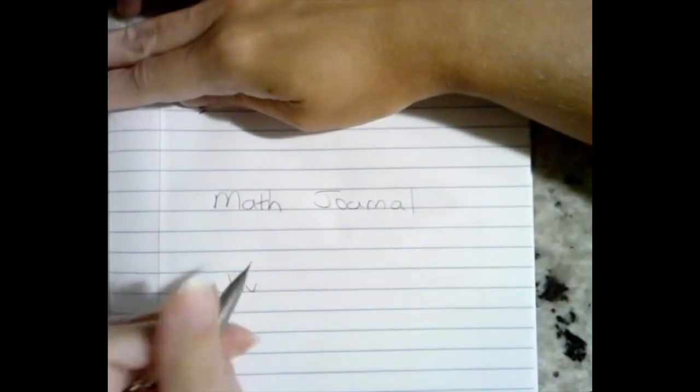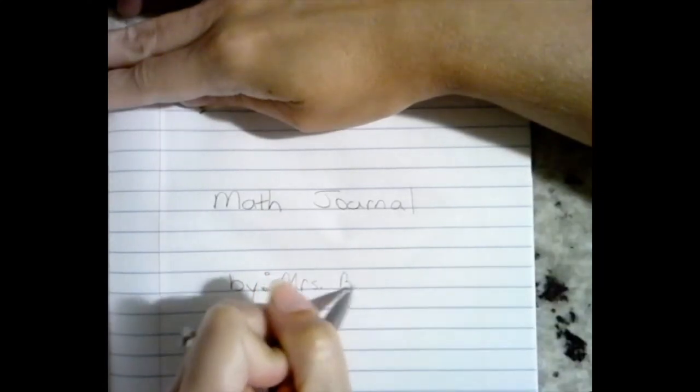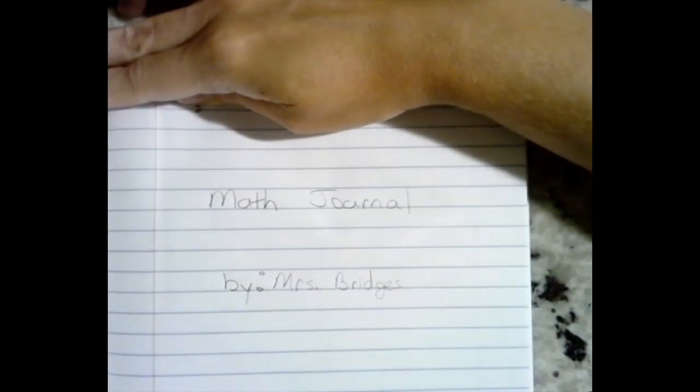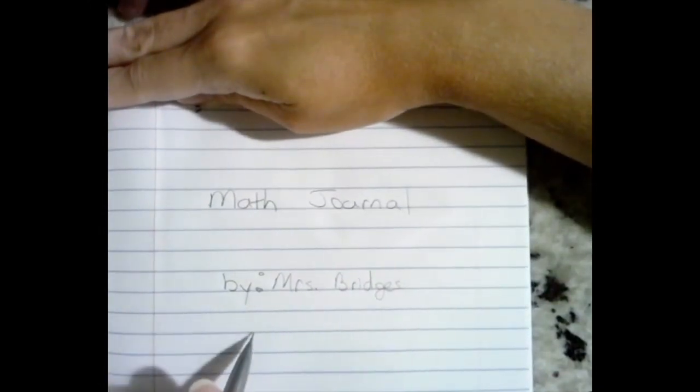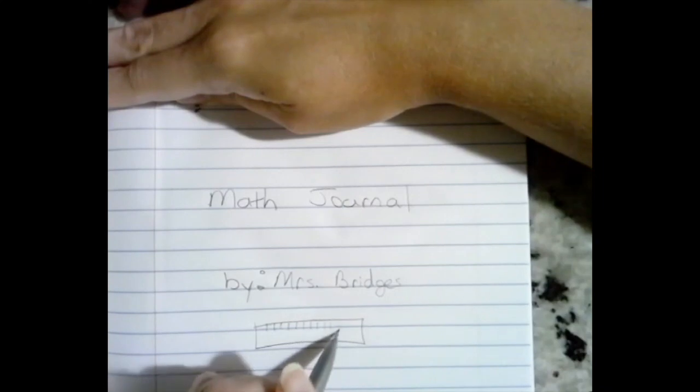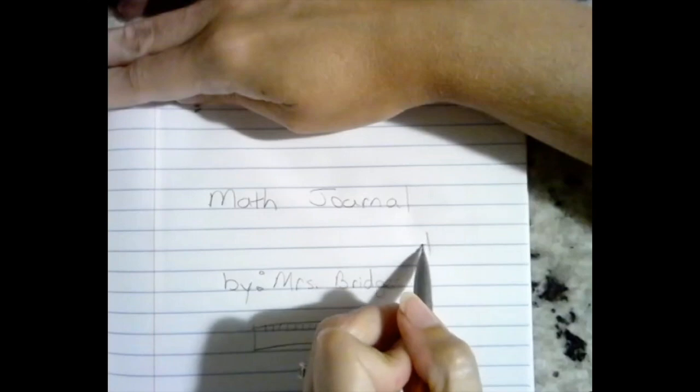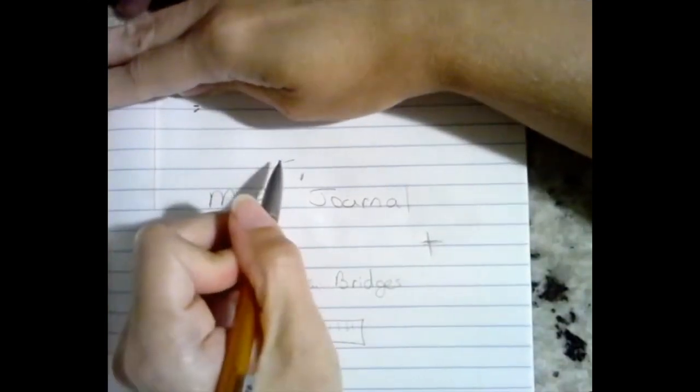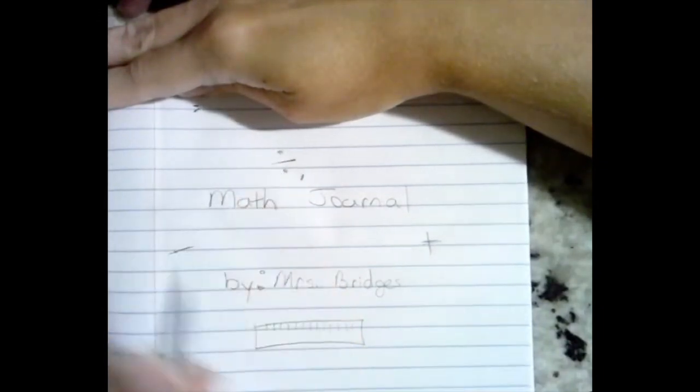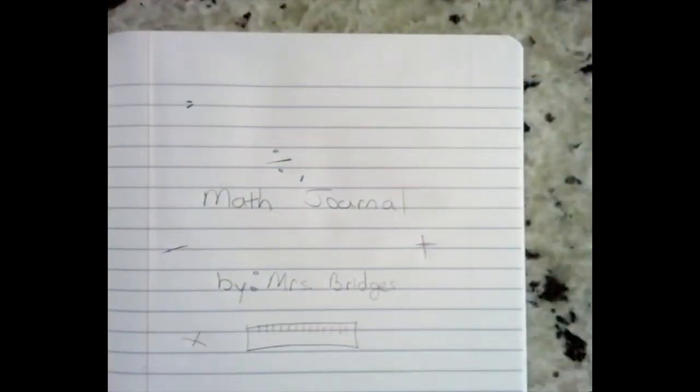My pencil keep breaking. Miss Bridges. And usually on a cover or on a title page, there is some sort of picture. Miss Bridges is not an artist. So I'm going to go simple. And this is my ruler. You can also do some math symbols, plus sign, minus sign, division sign, multiplication sign. So we're just making a title page.